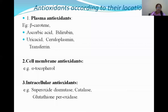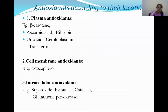Alpha-tocopherol is the example for cell membrane antioxidants. Superoxide dismutase, catalase, and glutathione peroxidase are examples of intracellular antioxidants. So antioxidants according to their location are divided into plasma antioxidants, cell membrane antioxidants, and intracellular antioxidants.